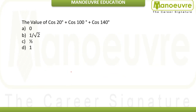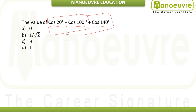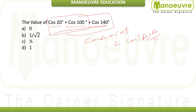Let's go to the first question: find the value of cos 20° + cos 100° + cos 140°. This is the type of question where two trigonometric identities appear in a sum form. We will use the sum and difference formula: cos A + cos B = 2·cos((B+A)/2)·cos((B−A)/2).